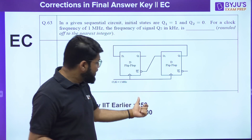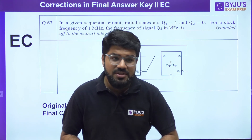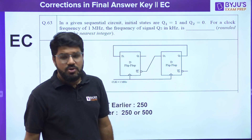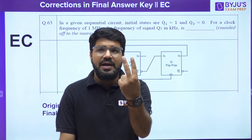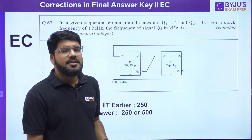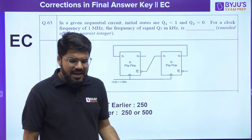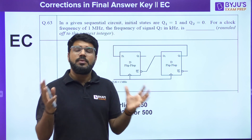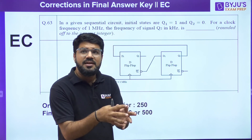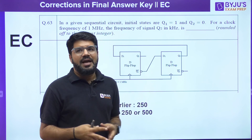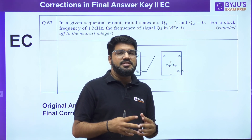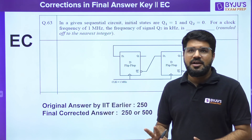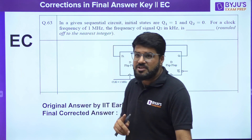Considering the complement output, the design is a Mod-4 counter, and 1 MHz divided by 4 gives 250 kHz — that was the correct answer. However, some students referenced NPTEL lectures where the bar and bubble were treated as cancelling, making it Q1, resulting in a Mod-2 device with answer 500 kHz. IIT accepted this because it wasn't a conceptual mistake — the confusion was in the diagram interpretation. So both 250 and 500 kHz answers will be given marks. This is a two-mark question, so very crucial.